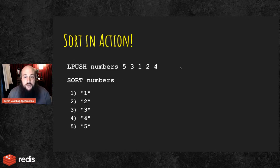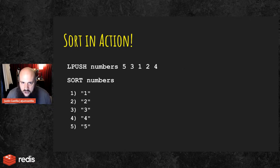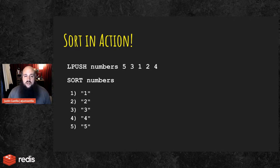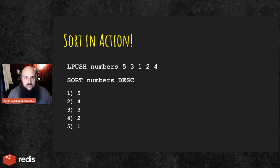The most simple Sort in action: we create a list of five, three, one, two, and four, then simply call Sort on our list of numbers and it goes in numerical order, lowest to highest. We can also set it to descending, so it goes four, three, two, one.